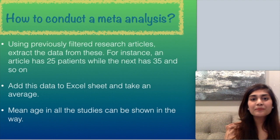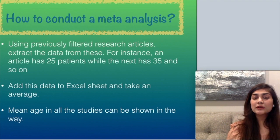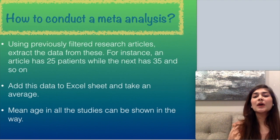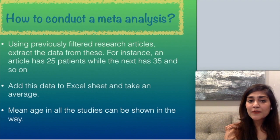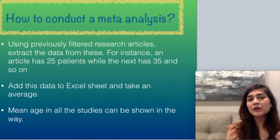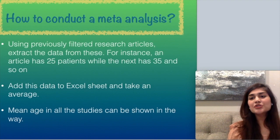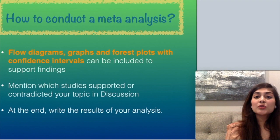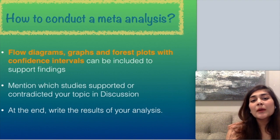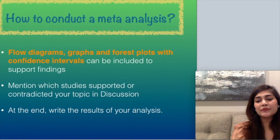To conduct a meta-analysis, use the previously filtered 8 to 10 research articles and extract the data from them. For instance, one article has 25 patients, the next has 35; the first has 50% females, the next has 45%. All this data goes into an Excel sheet and you take averages to find things like mean age. Flow diagrams, graphs, and forest plots with confidence intervals can also be included. Mention which studies supported or contradicted your topic in the discussion, and write the results of your analysis after summarizing all findings.